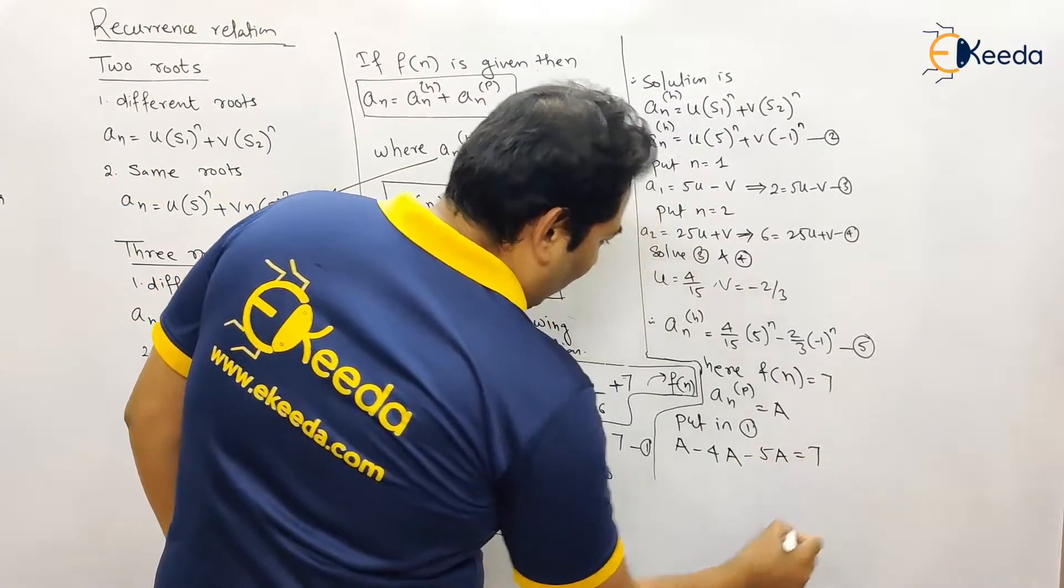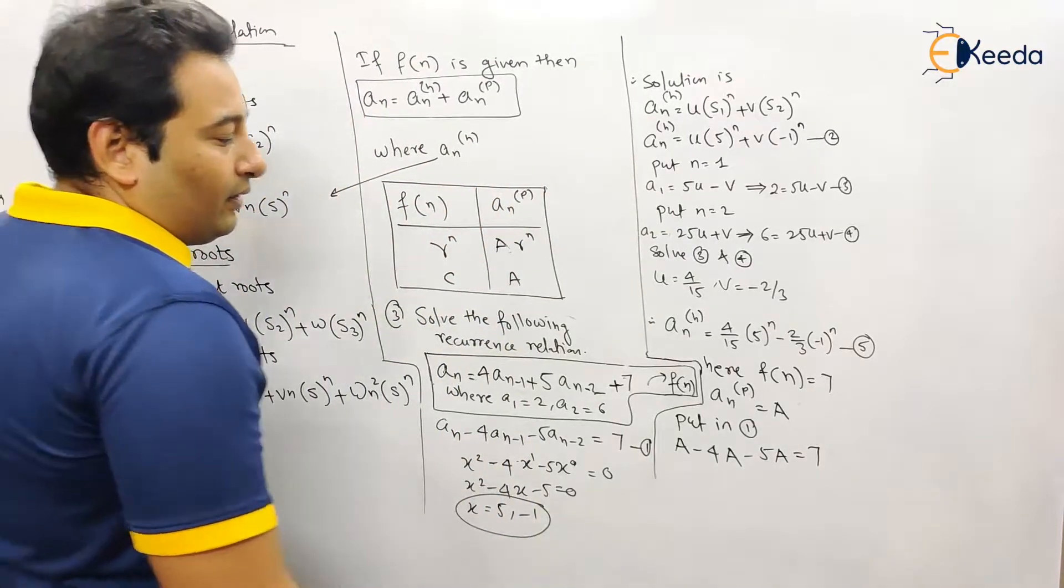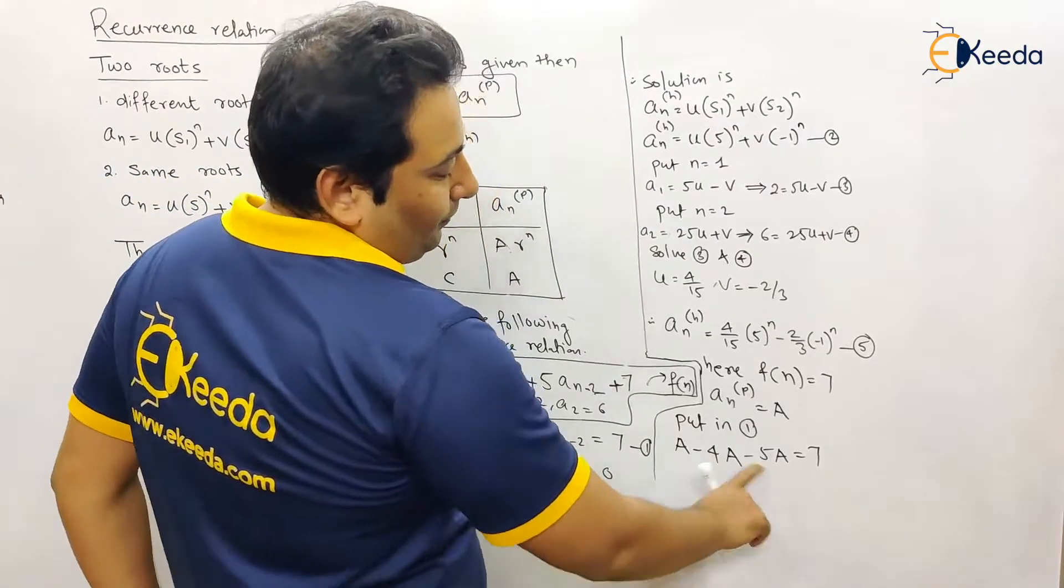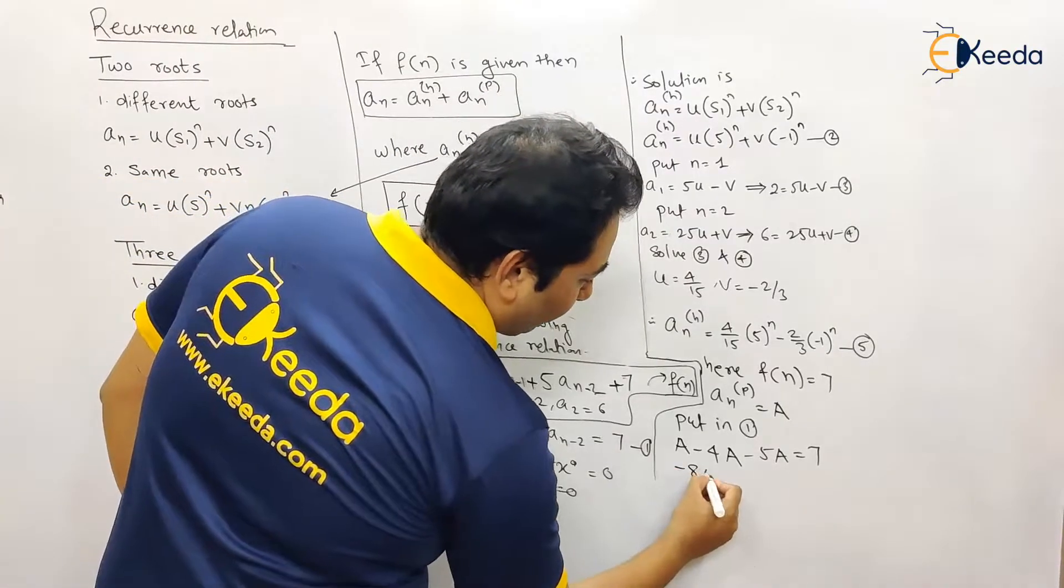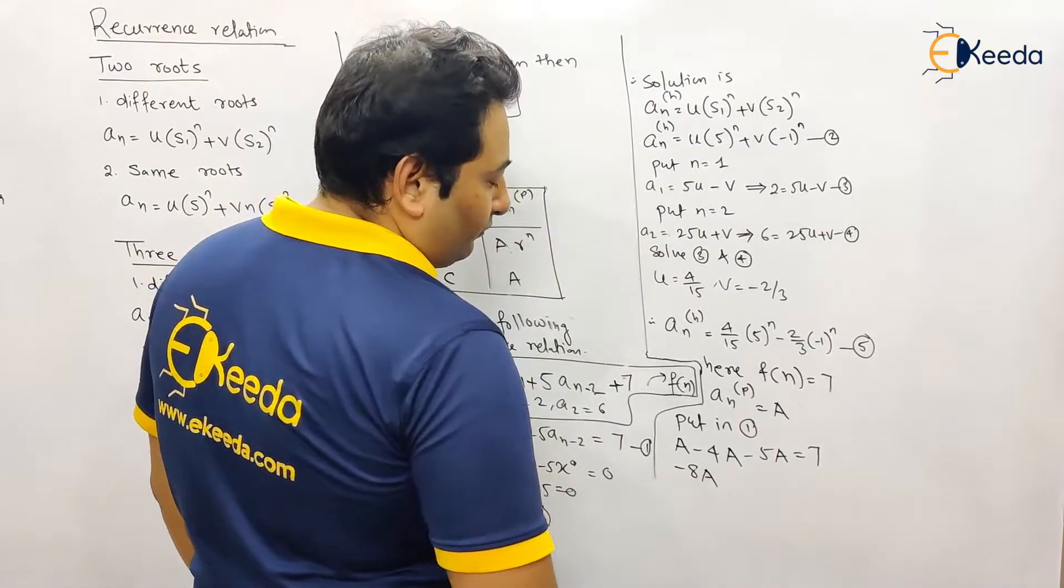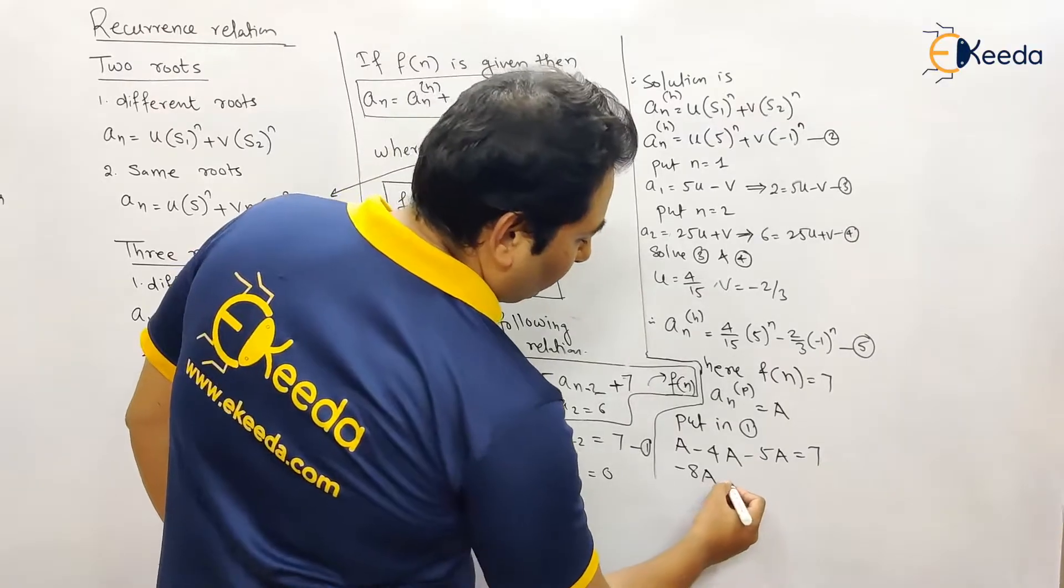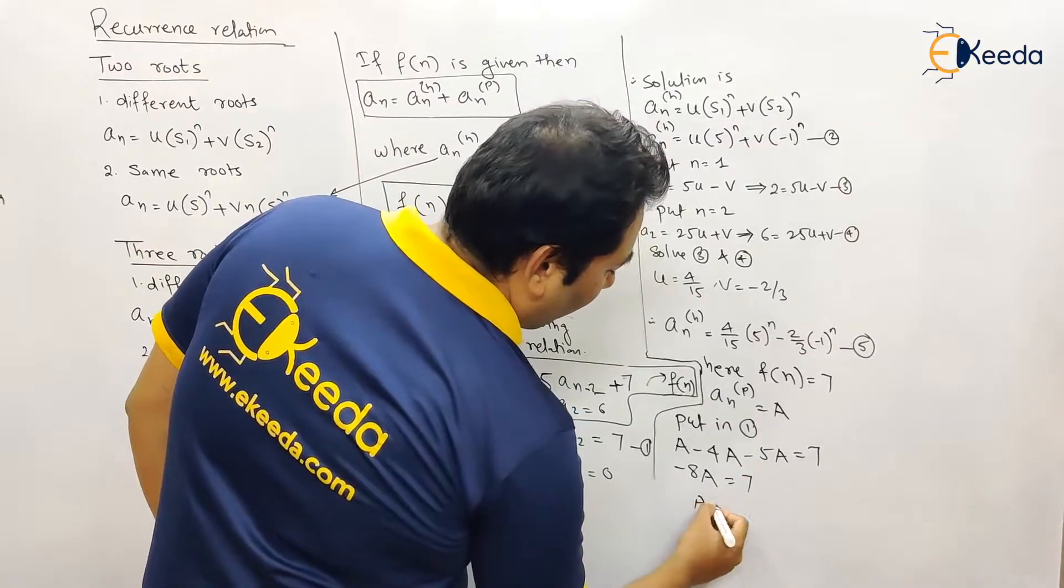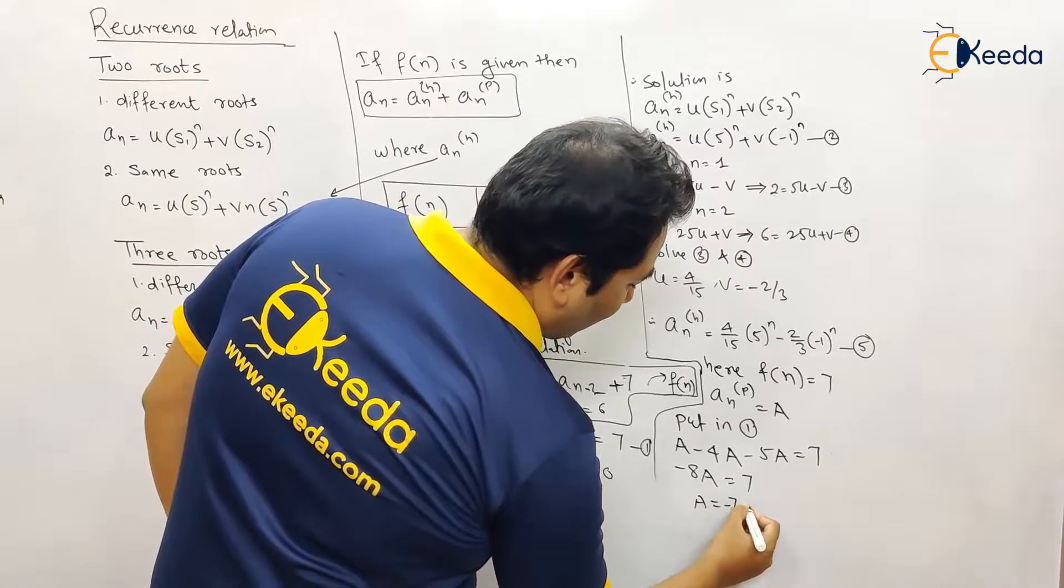Minus 5a equals 7. So this is -8a equals 7. The value of a is -7/8.